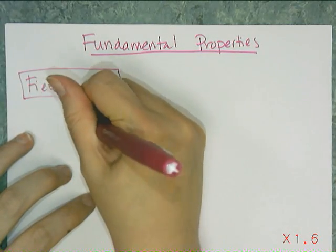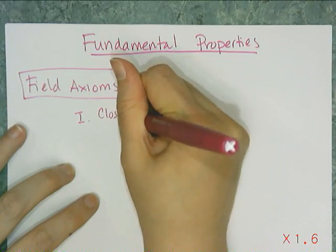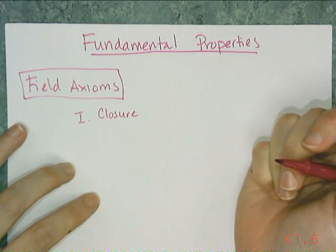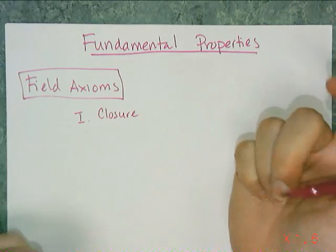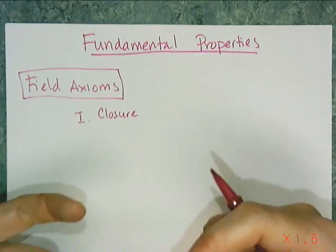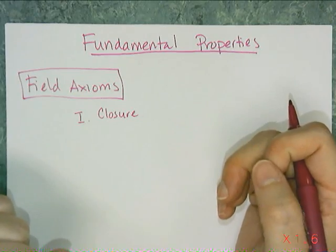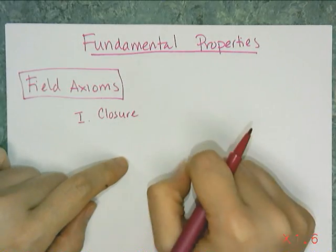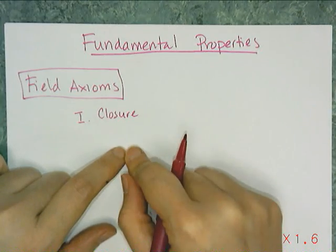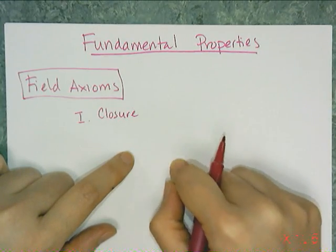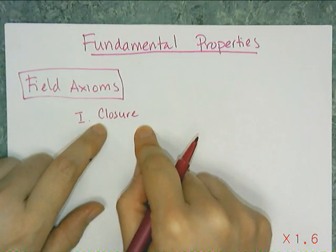The first three I'm just going to glaze over, because we really don't need these in Algebra 1. The first one is called closure, and all closure says is that the operations work in that set and completely within that set. So if I add a real number to another real number, I get a real number as a result. Or if I multiply two real numbers, I'm going to get a real number as a result.